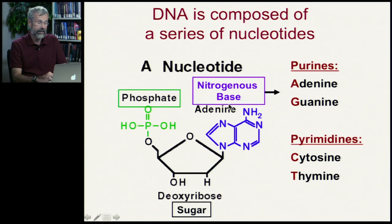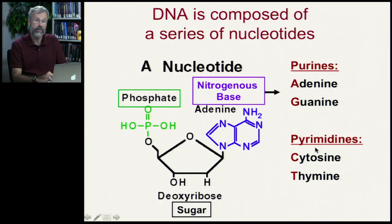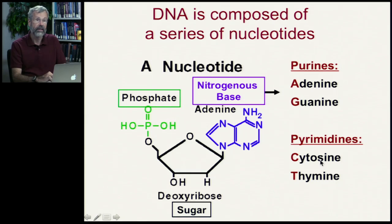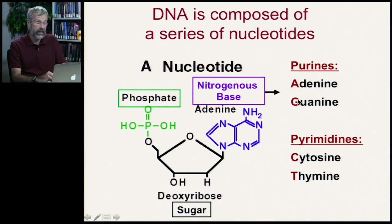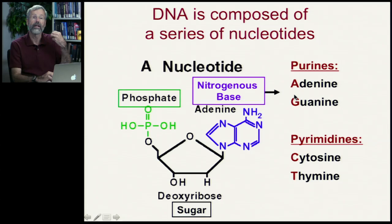Every nucleotide has the same phosphate and the same sugar. What's important is that there's variation along the length of the DNA molecule in the nitrogenous bases. There are two kinds: the purines and the pyrimidines. In the purines there are two compounds, adenine and guanine. In the pyrimidines it's cytosine and thymine. What you'll want to know is AGCT — we follow these through their initials because that's how we catalog the variation within a species.